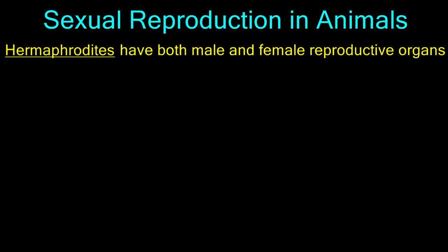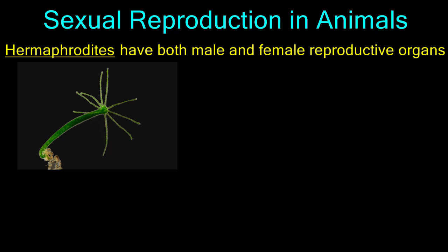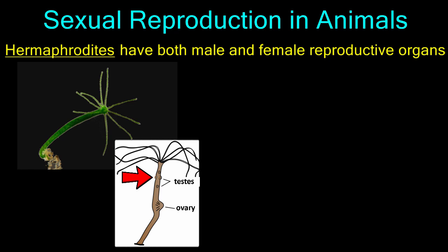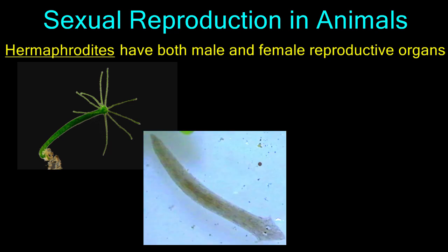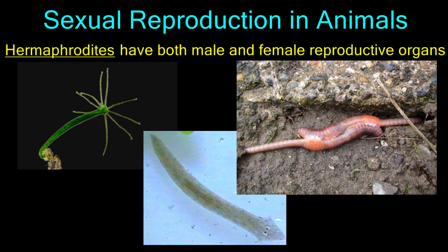Only the simplest animals are hermaphroditic. Hydra are animals that are hermaphroditic. Their testes produce sperm that are released into the surrounding water. Waves and currents transport the sperm to the ovaries of other hydra where fertilization occurs. Another example of a hermaphrodite is the planarian or flatworm. Earthworms are also hermaphroditic. Both planaria and earthworms cross-fertilize with a partner. Each worm donates sperm and receives sperm during the interaction.